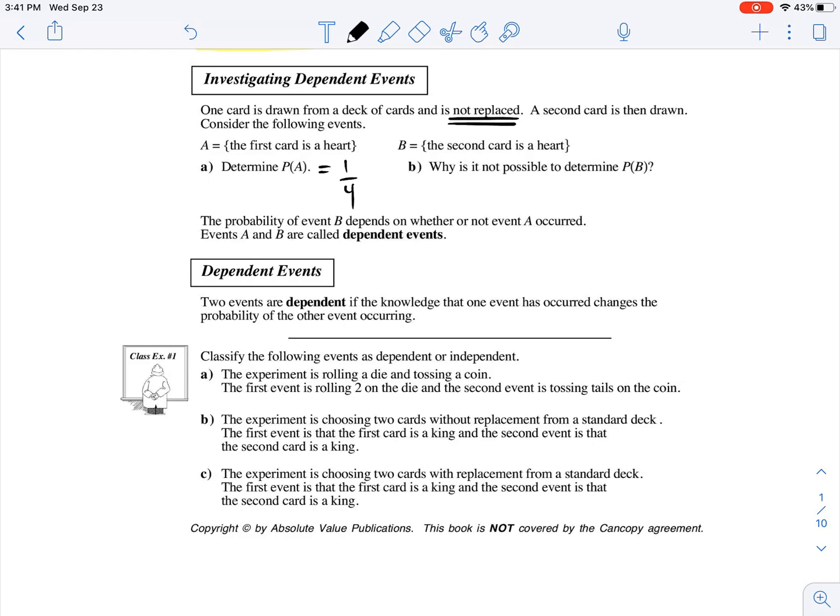Now, determine the probability that the second one is a heart. And now the question is asking us, why is it not possible to determine the probability of B?